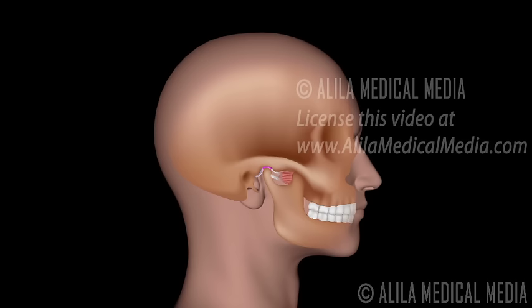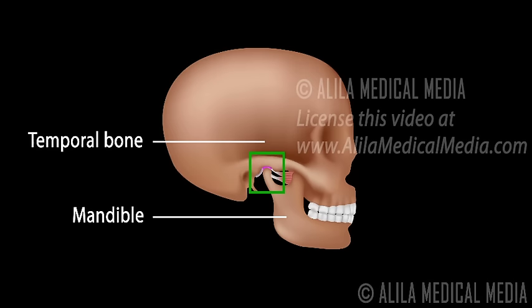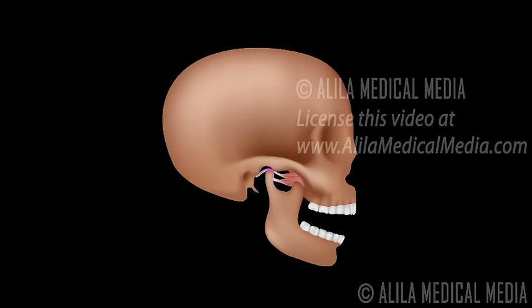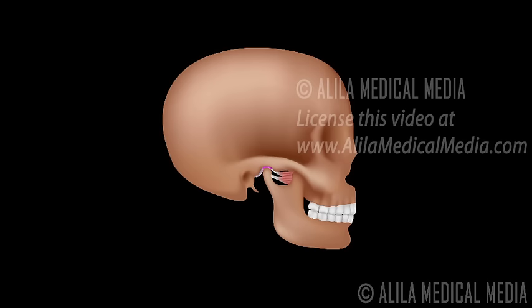The temporomandibular joint, the TMJ, is the joint between the lower jawbone, the mandible, and the temporal bone of the skull. The TMJ is responsible for jaw movement and enables chewing, talking, and yawning.